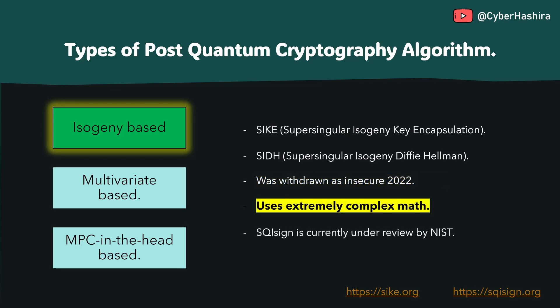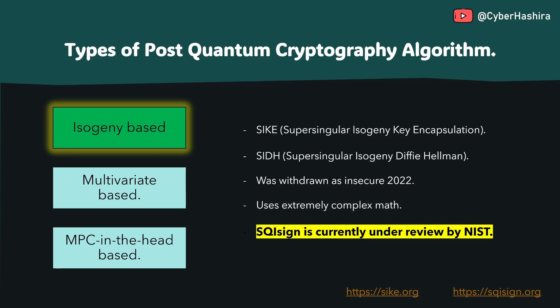The mathematics used in isogeny algorithms is also highly complex, making the task of reviewing these algorithms challenging. At the time of recording this video, there is only one algorithm called SQIsign under second-round review by NIST as part of the additional digital signature schemes.